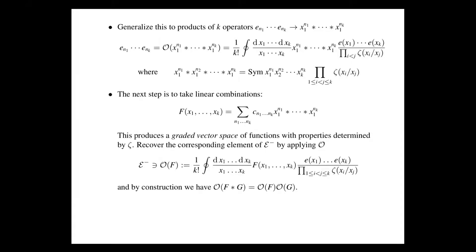We have arbitrary products of such operators, and we can cook up more interesting elements by taking linear combinations. So I can define various elements f which depend on k different variables and are linear combinations of such shuffle products. I can manipulate these new functions — they are explicit rational symmetric functions. Once I gain valuable information about these functions, I can go back to the algebra by taking these integrals. This map is a homomorphism, so the shuffle product becomes the normal product in the algebra epsilon-minus.